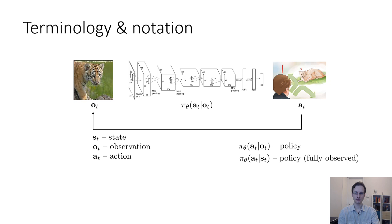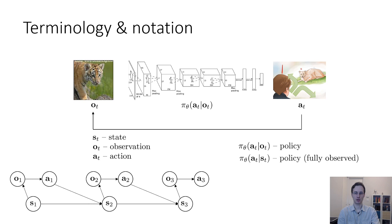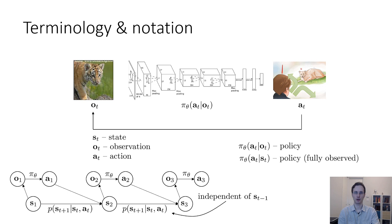Important definitions to know are the state, which we denote s_t, the observation o_t, and the action a_t. As we learned in the imitation learning lecture, the observation and state can be related to one another via the following graphical model, where the edge between observations and actions is the policy, the edge between current states, actions, and future states is the transition probability or the dynamics, and the state satisfies the Markov property, which means that the state at time t+1 is independent of the state at time t-1 when conditioned on the current state s_t.